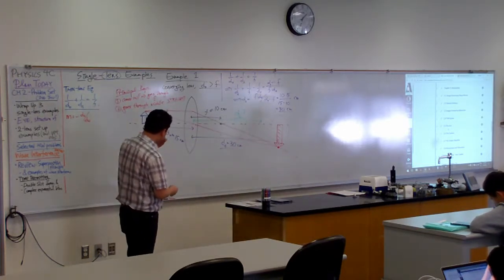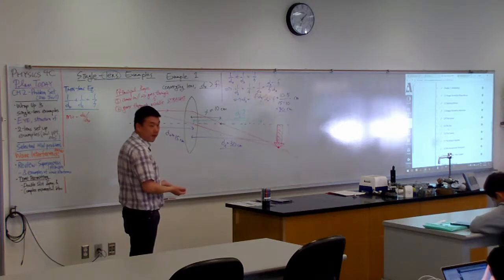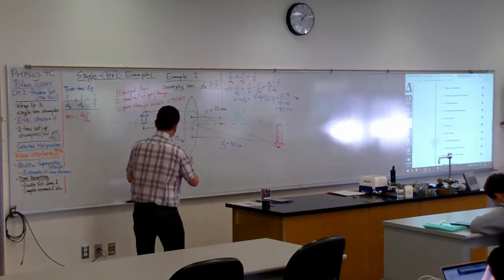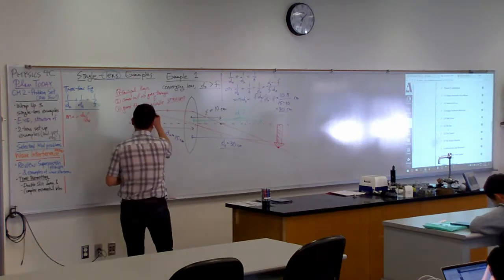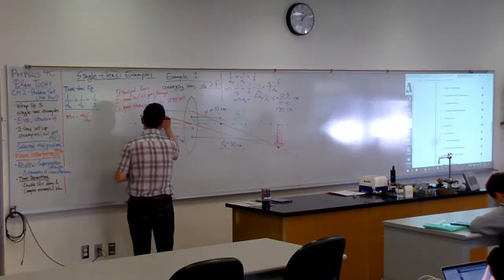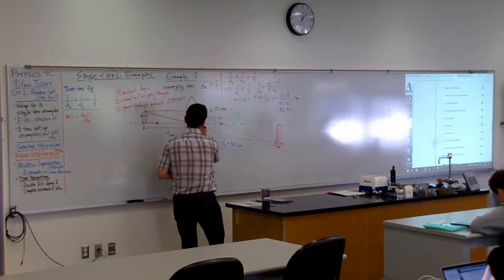So let me draw the auxiliary figures that will let you derive the magnification formula. These are the auxiliary figures. This triangle here, and this triangle here.